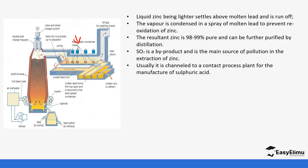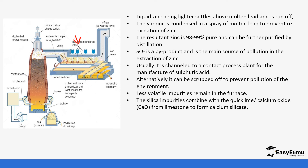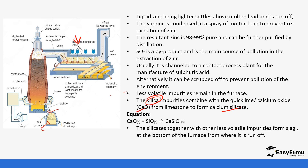Sulfur dioxide is one of the impurities — because zinc blende contains sulfide. The sulfur dioxide can either be used in the manufacture of sulfuric acid or scrubbed off using calcium hydroxide scrubbers. Less volatile impurities such as silica remain in the furnace and react with calcium oxide to form calcium silicate. Calcium silicate and other impurities form slag at the bottom of the furnace, which is run off. Don't forget the function of the molten lead.